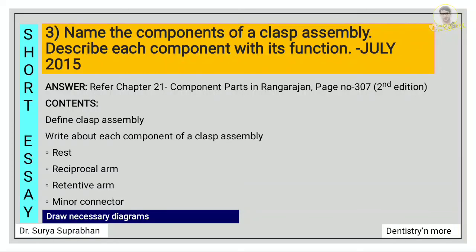Name the components of a clasp assembly and describe each component with its function. For this also refer chapter 21, component parts, page number 307. First define what is clasp assembly, then write about each component: rest, reciprocal arm, retentive arm, and minor connector. Draw the necessary diagrams.